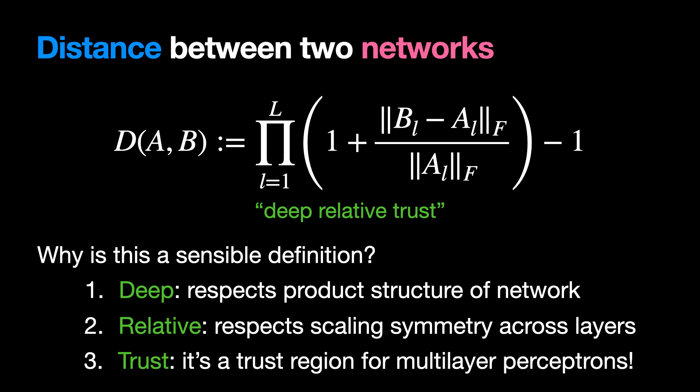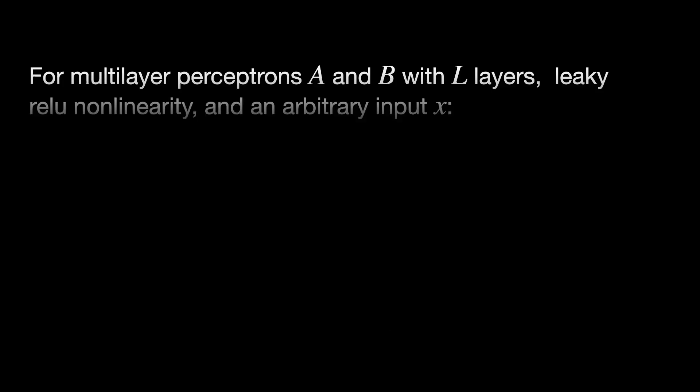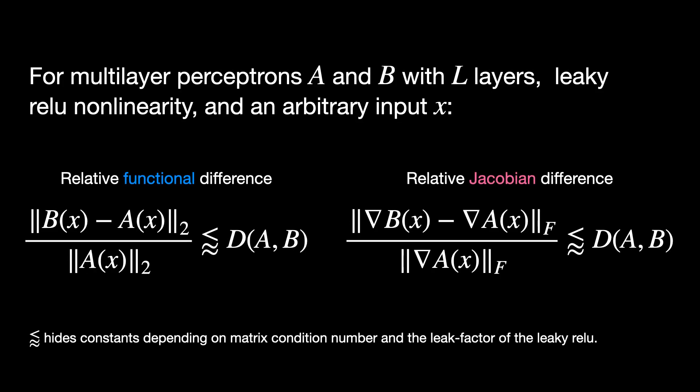What does that mean? We show in the paper that deep relative trust bounds the relative functional difference and relative Jacobian difference between two multilayer perceptrons.